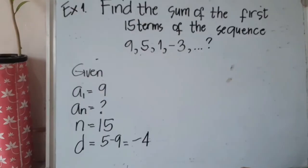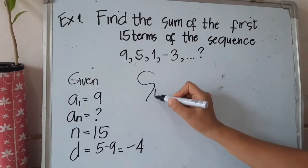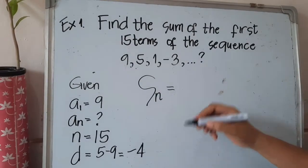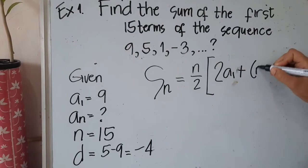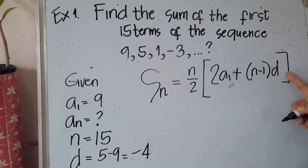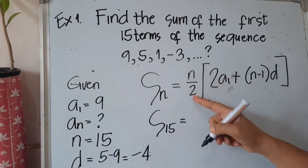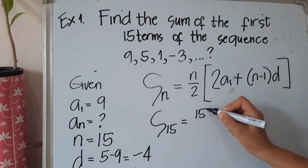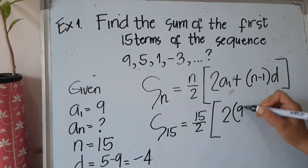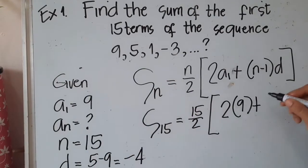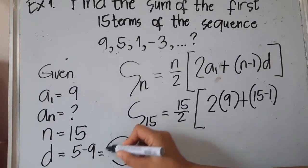Since we don't have the last term, we use the second formula: S sub n equals n over 2 multiplied by 2 times a sub 1 plus n minus 1 times d. Substituting: the sum of 15 terms equals 15 divided by 2, multiplied by 2 times 9 plus 15 minus 1 times negative 4.